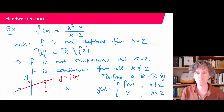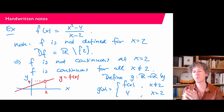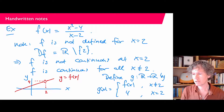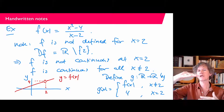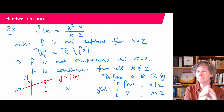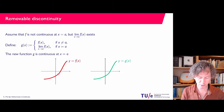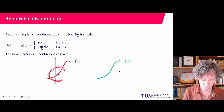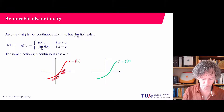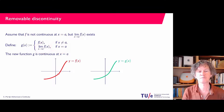Now you can imagine defining a new function g from the reals to the reals: g(x) = f(x) for x ≠ 2, and g(2) = 4 (the value of the limit as x → 2). Then g inherits continuity from f everywhere except 2, and at x = 2 it is also continuous because we defined it to equal the limit. This type of situation — where f is discontinuous at one point but you can repair it — is called a removable discontinuity. It happens when the limit of f exists at the problem point, so you can define a new continuous function by assigning that limit as the function value there.